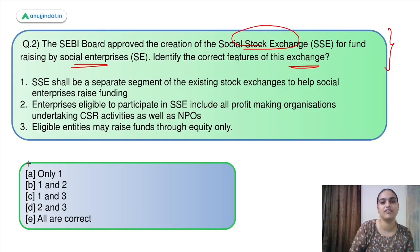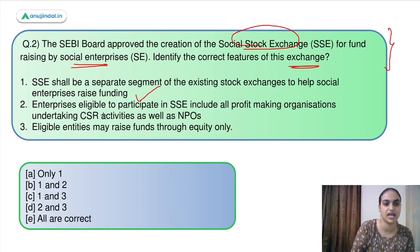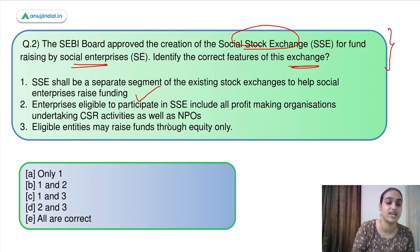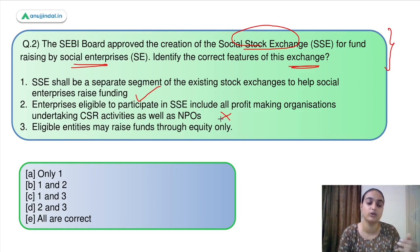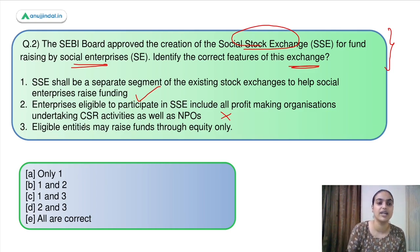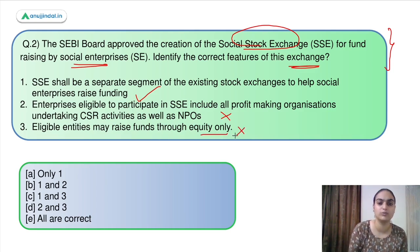Coming back to the question, we had to identify the correct statements. First: SSE shall be a separate segment of an existing stock exchange to help social enterprises raise funding — this is correct. Second: enterprises eligible to participate include all profit-making organizations undertaking CSR activities — this is incorrect; only for-profit social enterprises and NPOs working in those 15 categorized activities are eligible. Third: eligible entities may raise funds through equity only — incorrect, as they can go for bonds and mutual funds as well. So only the first statement is correct. Answer is option A.